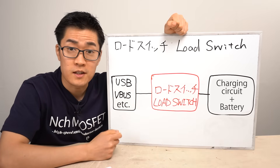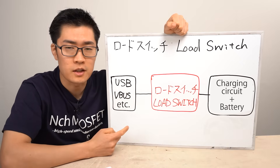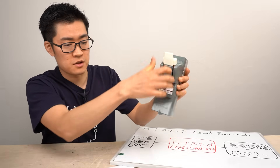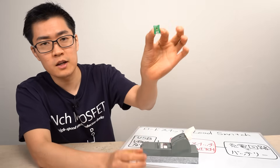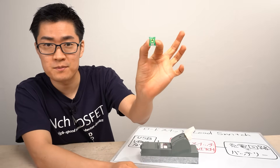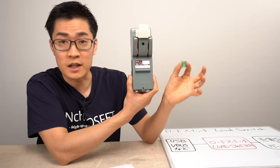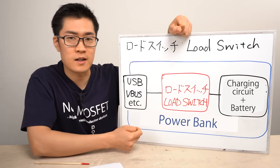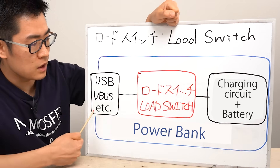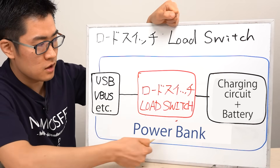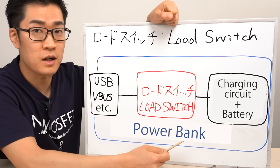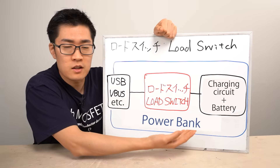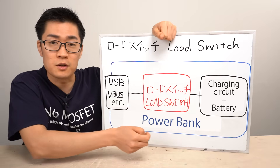The primary role of a load switch is to control power supply to a circuit. When we say switch, we're not referring to mechanical ones, but rather to electronic switches embedded within circuits. In a power bank, for example, the load switch is placed between the USB input-output ports and the battery and charging control circuitry. By turning the load switch on and off, you can control the connection between external devices and the internal circuitry of the power bank.